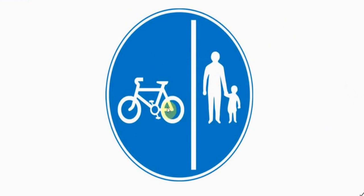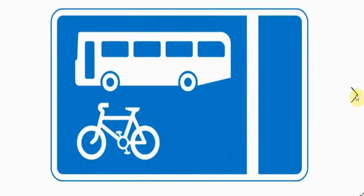This is where the cycle route will be on the path - on the pavement rather than the road - so cycles and pedestrians can use this route, with a line in the centre to try and keep the two apart. This will be a bus lane, saying that buses and cycles can drive in this lane but you must keep out if you're in a car. And that's the cycle lane.